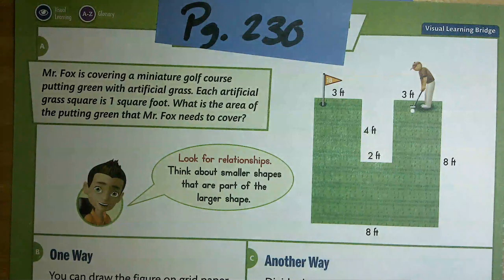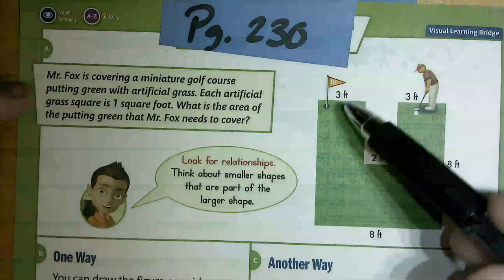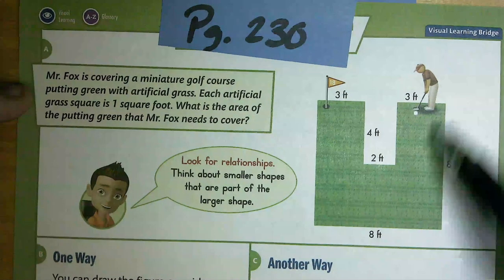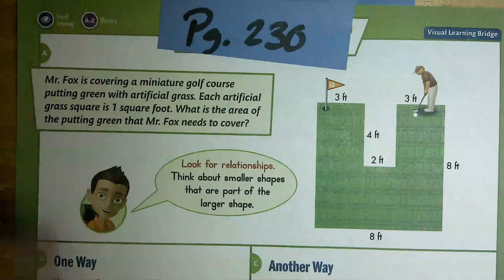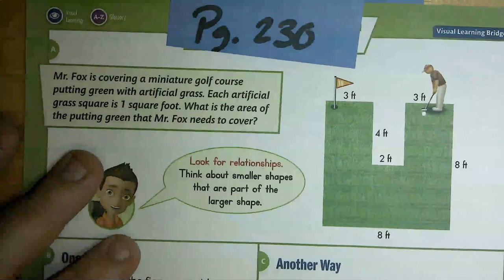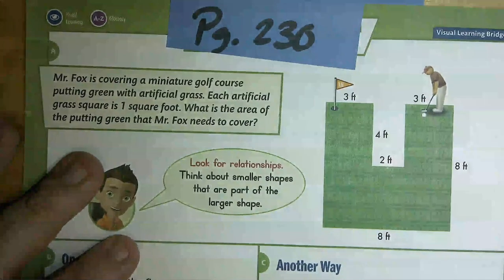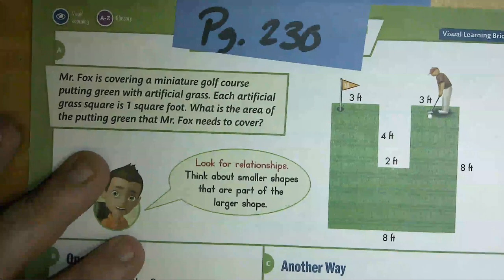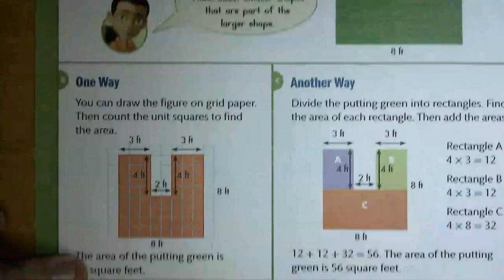On page 230 we've got another irregular shape — not a rectangle or a square, it's kind of a U-shape this time. It says: Mr. Fox is covering a miniature golf course putting green with artificial grass. Each piece of artificial grass is one square foot. What is the area of the putting green that Mr. Fox needs to cover? We need to think about smaller shapes that are part of the larger shape.